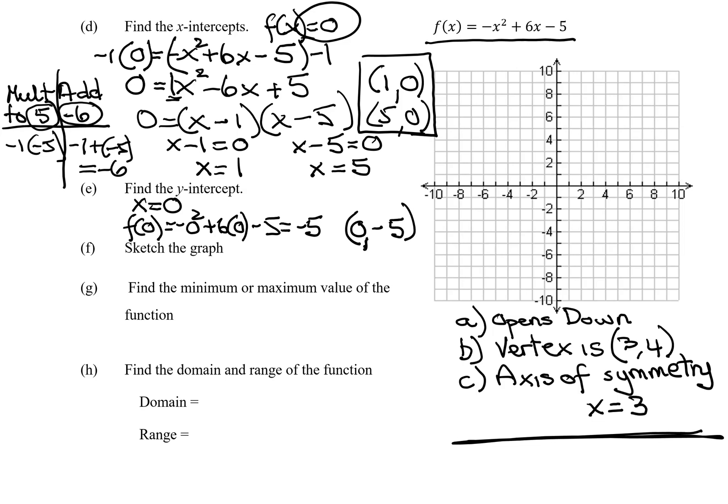Now I need to sketch the graph. So the first thing I'm going to do is find the vertex. The vertex is 3 and 4. So 1, 2, 3 to the right, 4 up. There's my vertex. The axis of symmetry is the vertical line through the vertex. And that just means my graph is going to be symmetric about that line.